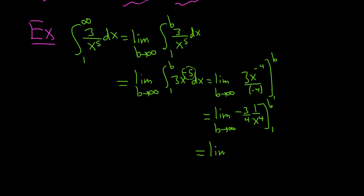This is the limit as b approaches infinity. I'm going to leave the 3 fourths here on the outside. First, we plug in b, so we get 1 over b to the fourth. We subtract, and then we plug in 1, so we get 1 over 1 to the fourth.